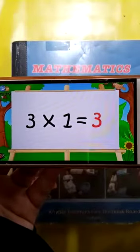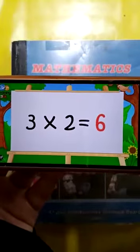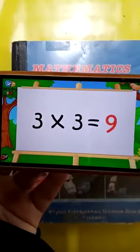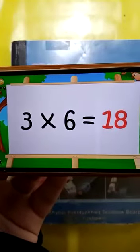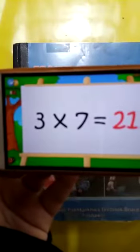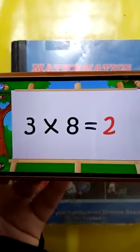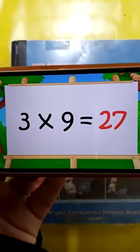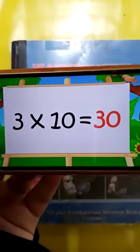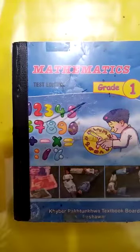Today we will learn the table of three. Three ones are 3, three twos are 6, three threes are 9, three fours are 12, three fives are 15, three sixes are 18, three sevens are 21, three eights are 24, three nines are 27, three tens are 30. Hope you will revise this table of three.